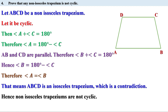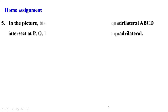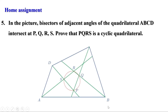Today we have done some problems on page 59 and we have learnt the contradiction method. Now there is a homework: in the picture, bisectors of adjacent angles of the quadrilateral ABCD intersect at P, Q, R, S. Prove that PQRS is a cyclic quadrilateral. In the next video we shall discuss the remaining problems. Till then, bye.